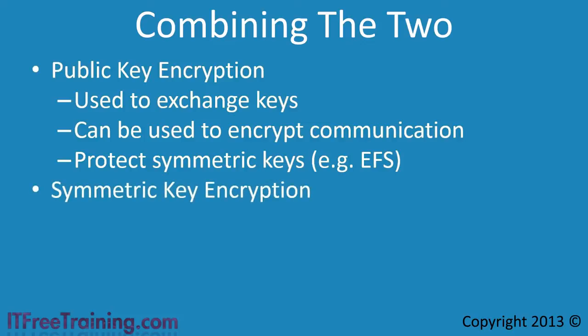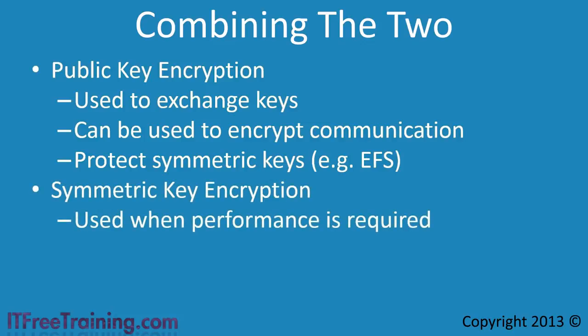For these reasons, symmetric key encryption is often used when performance is required. Public key encryption is used when you do not want decryption to occur without the private key. You will find that some systems combine the two to give multiple users access. For example, Windows file encryption uses a combination of both encryption types so that multiple users, including recovery users, can access the symmetric key. When multiple users require access, the symmetric key is simply encrypted multiple times with each of the public keys required. Either method can meet the needs of data encryption and communication, but combining the two does give a good trade off between performance and security.